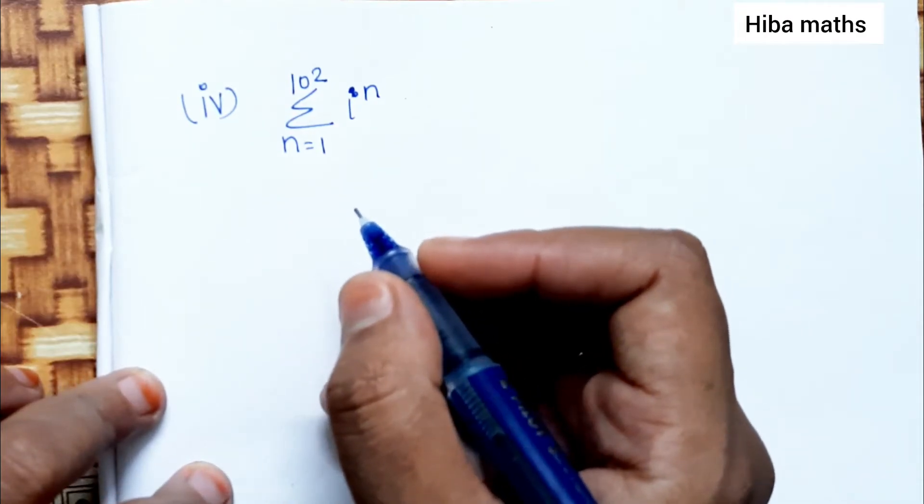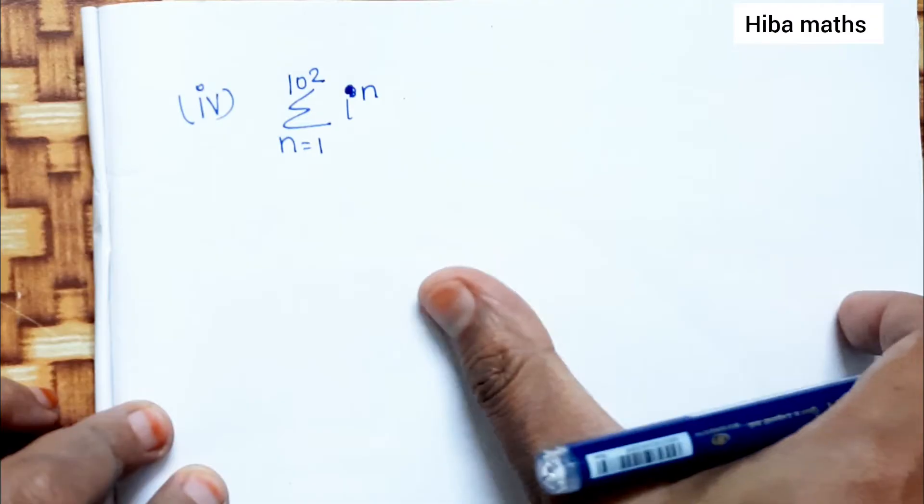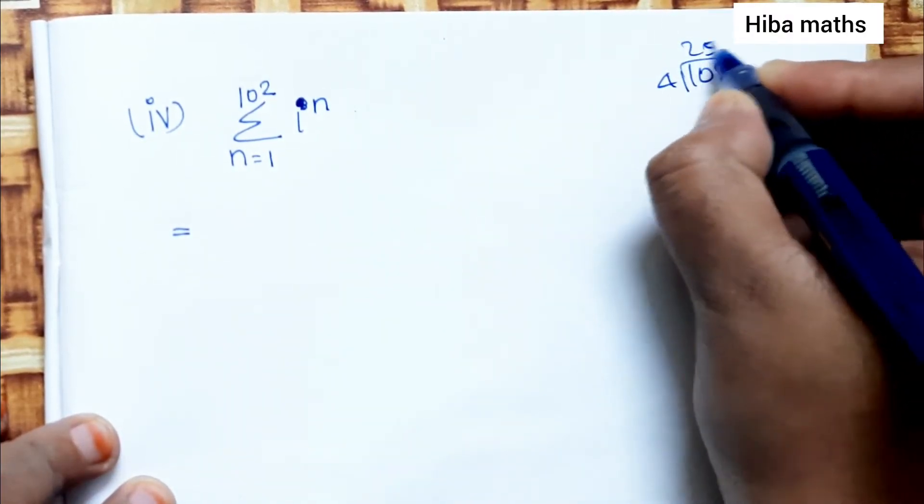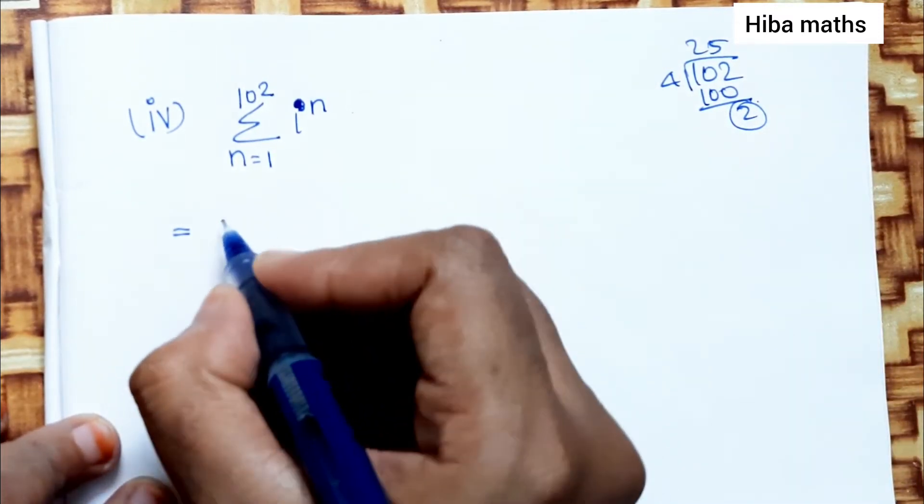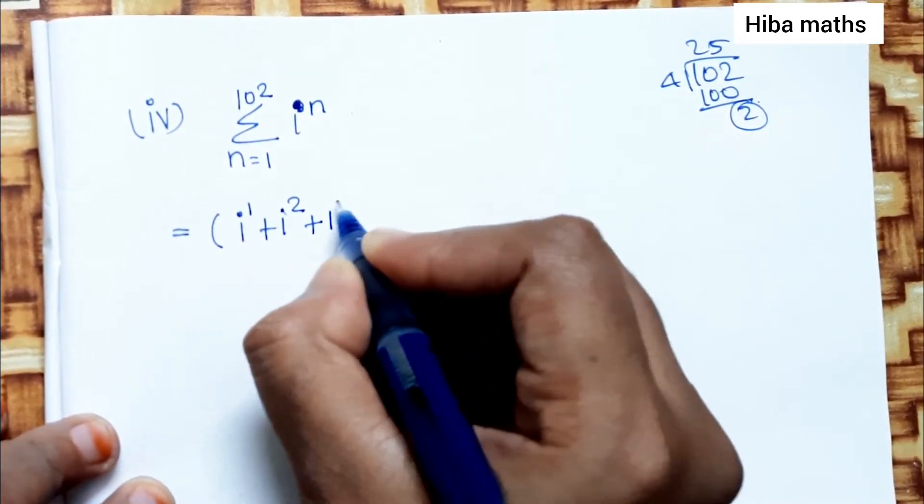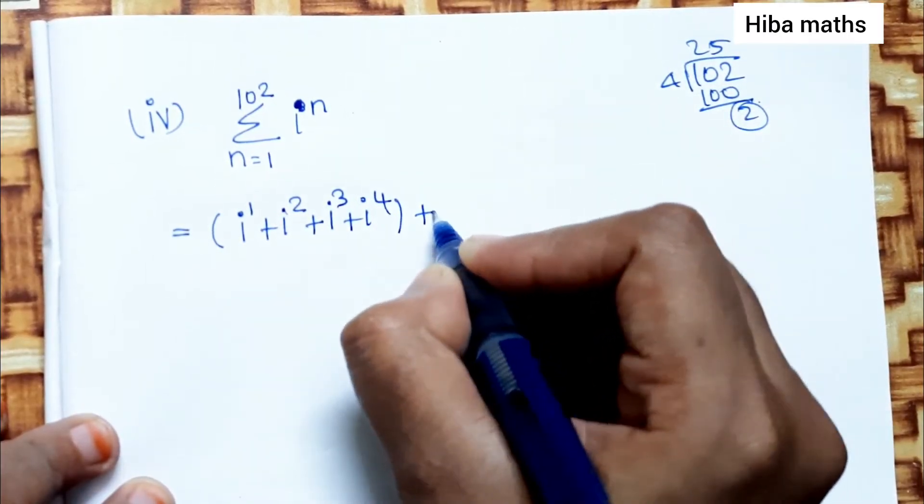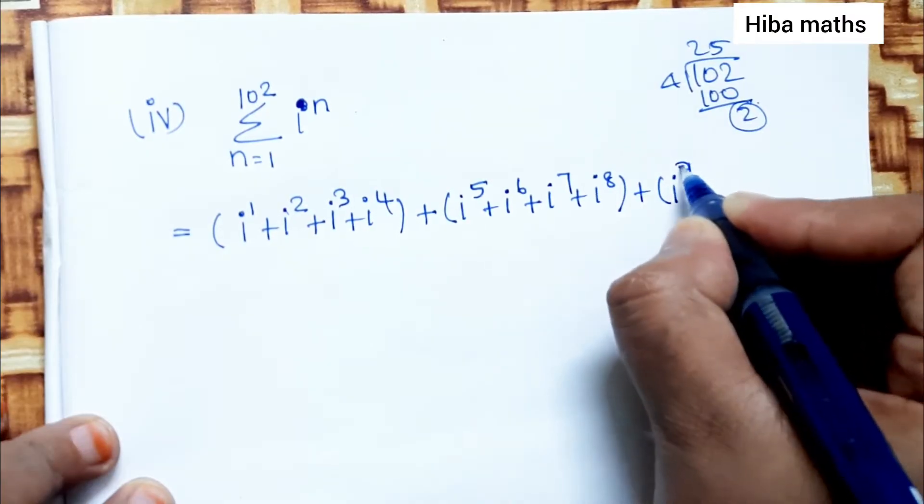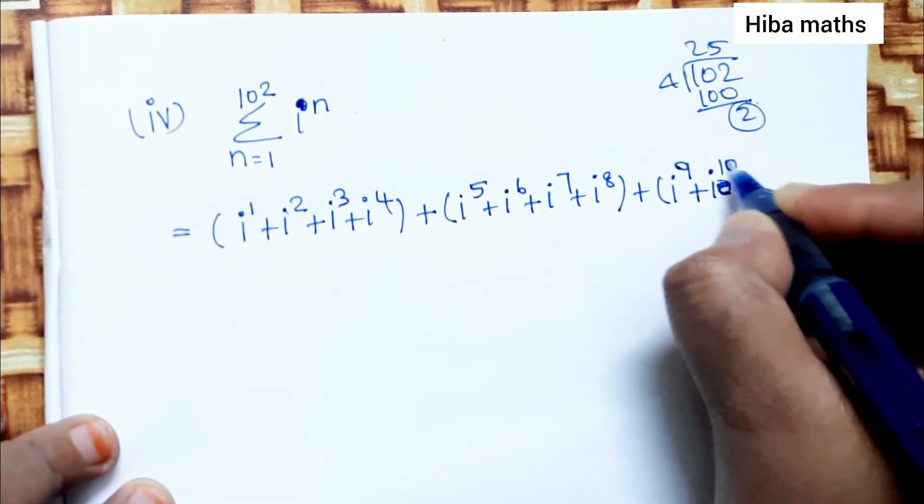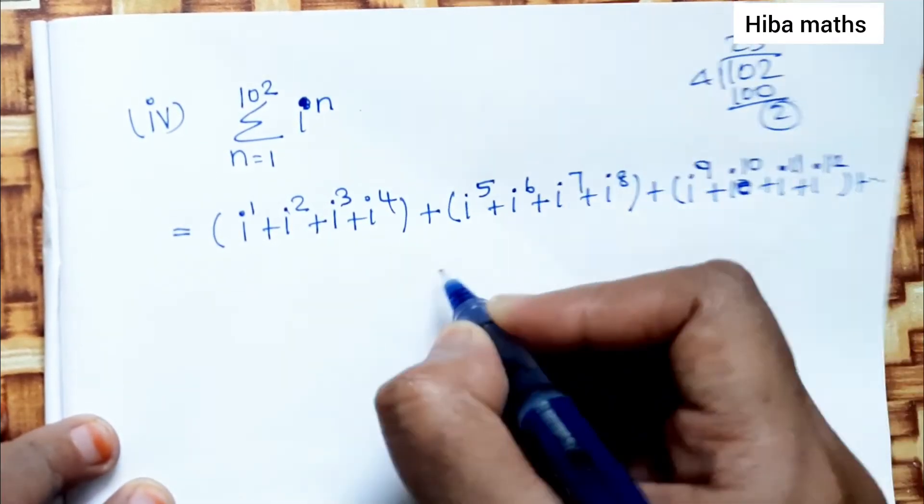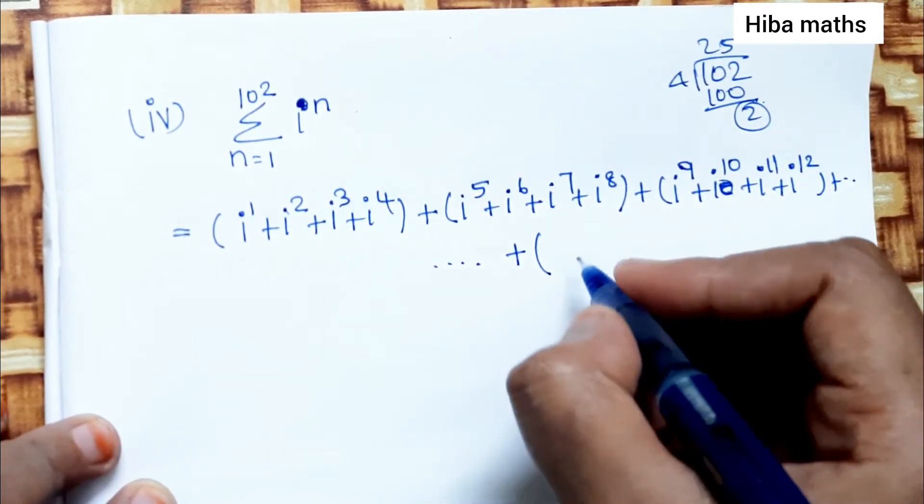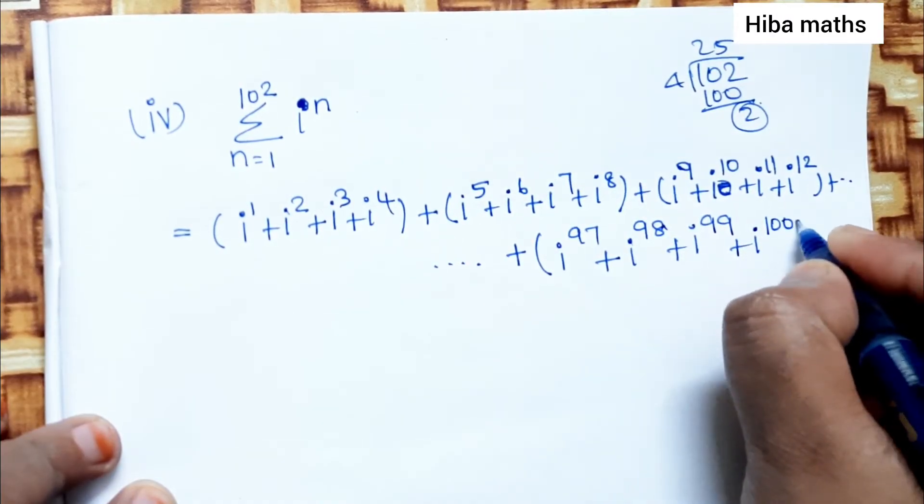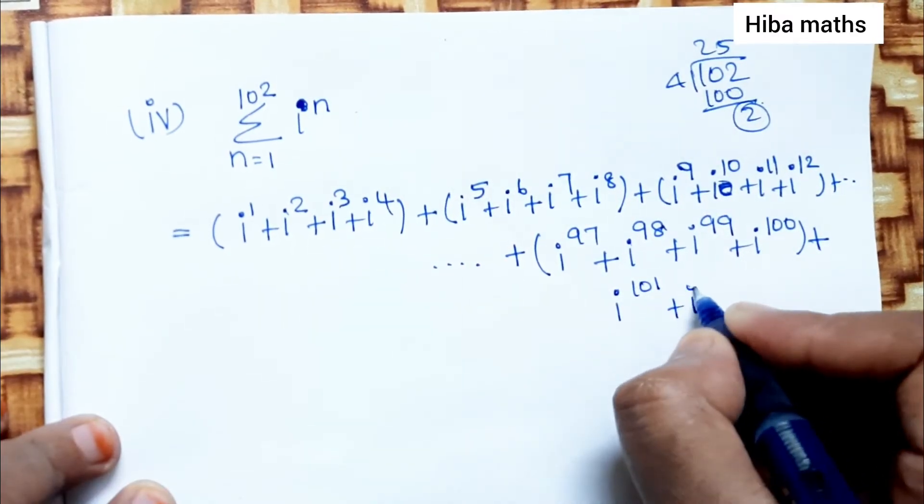Fourth sum is summation of n equals 1 to 102, i power n. Now we have a lot of values, so how do we solve it? In the book we have 4 terms, now we have 102, 4 into 25 is 100. So we take it in the book. i power 97, i power 98, i power 99, i power 100, plus i power 101, i power 102.